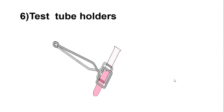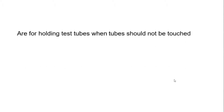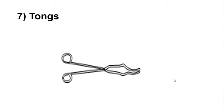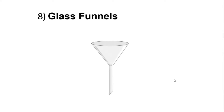Number six, test tube holders. As you can see on the picture, that's test tube holders. The main function of test tube holders is for holding test tubes when tubes should not be touched or cannot be touched. We usually use test tube holders. Number seven, tongs. Tongs are similar in function to forceps but are useful for large items.